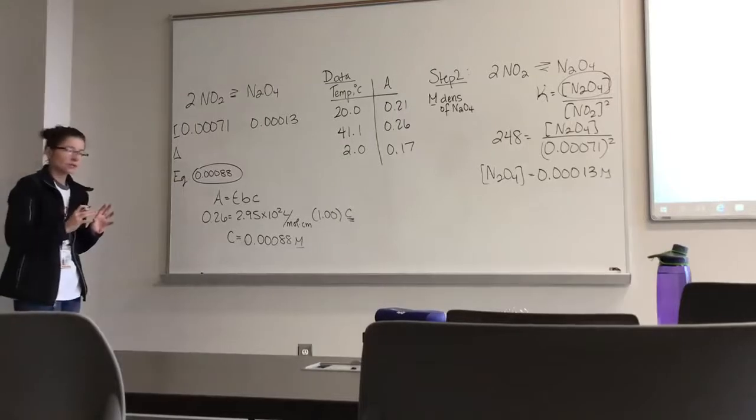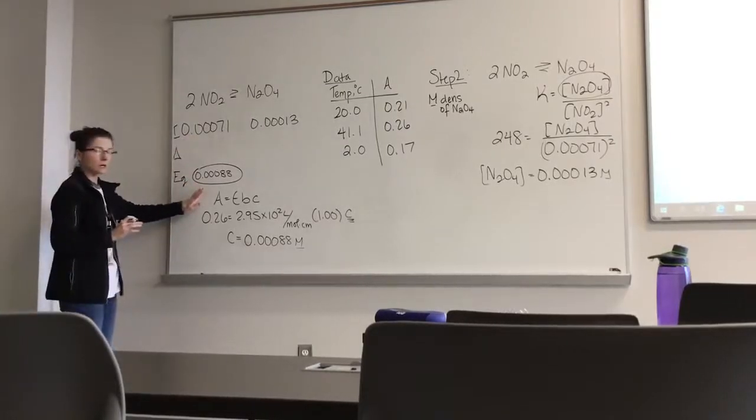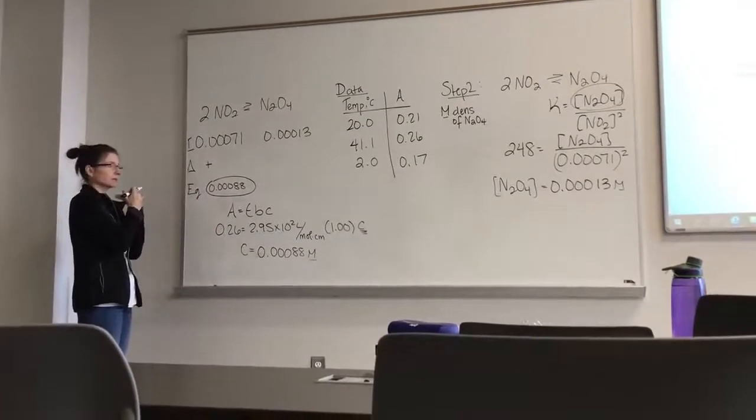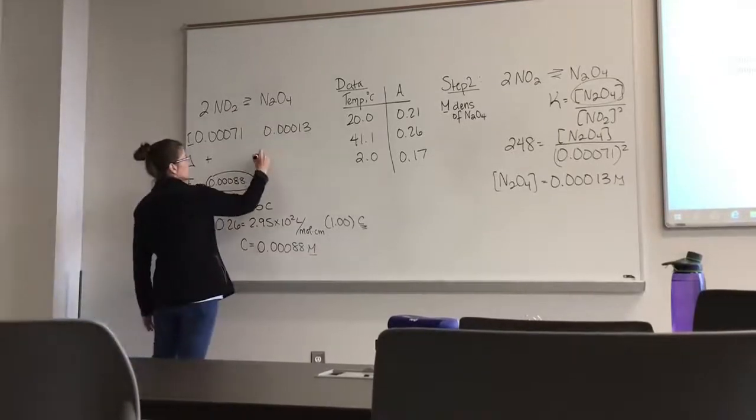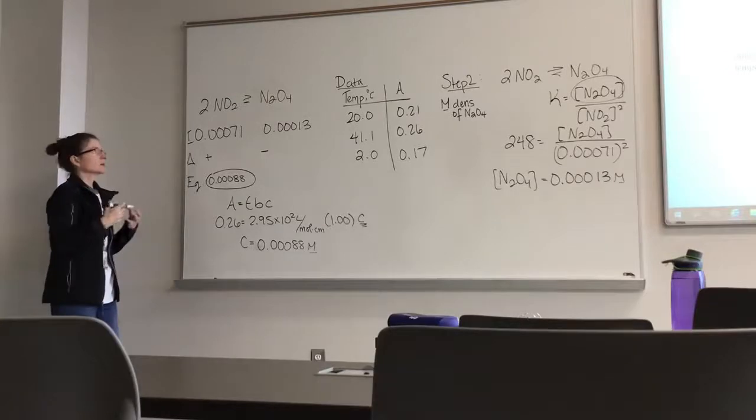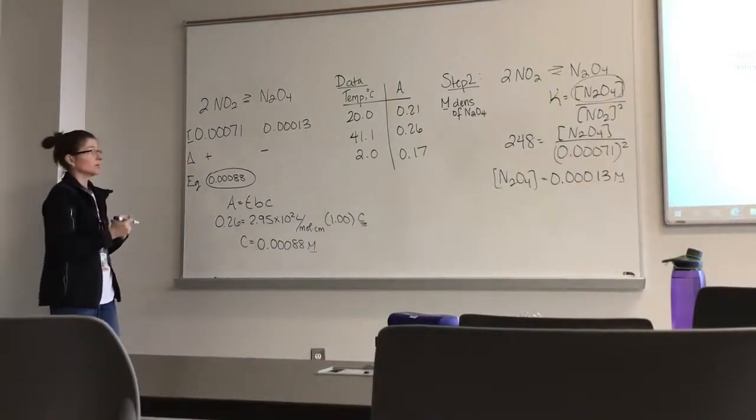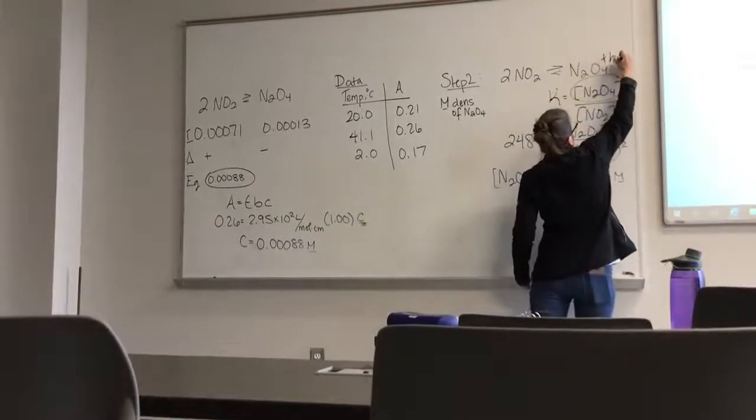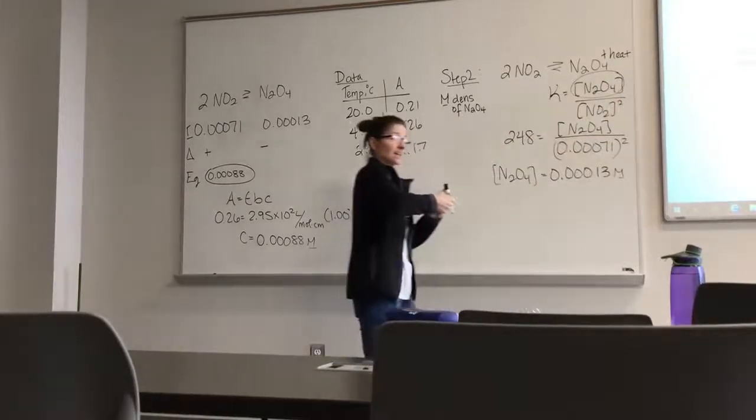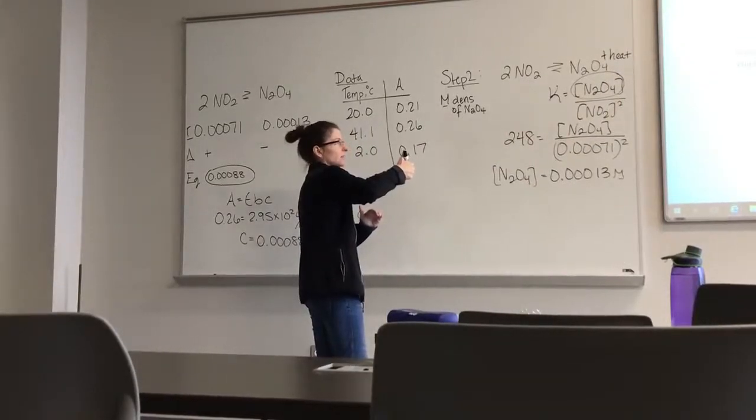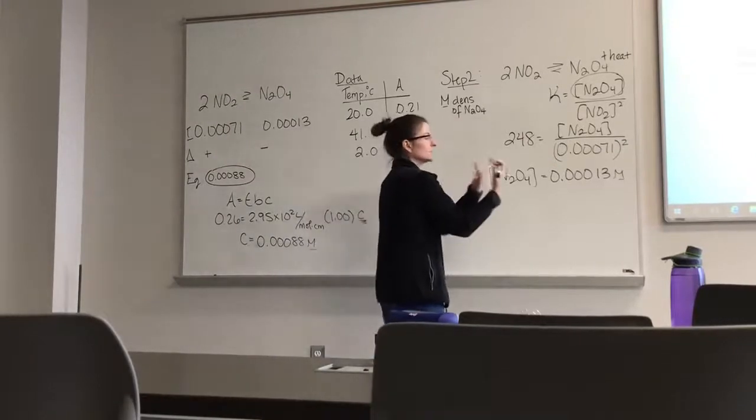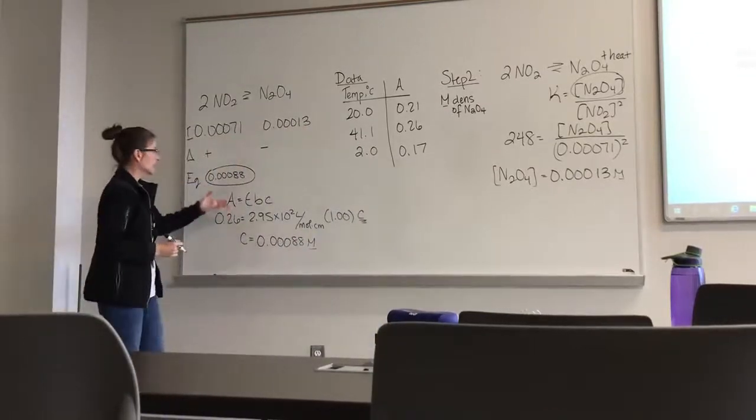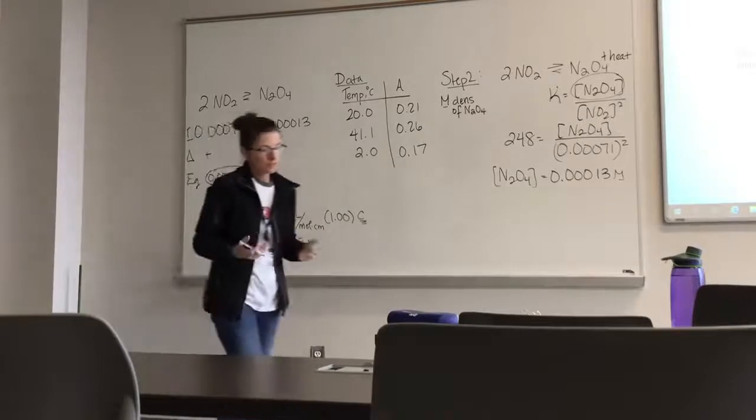Now notice something very interesting. I am producing more NO2 gas. So that means that I am going in this direction. My equilibrium is shifting in this direction, which means that if it's shifting in that direction, I am losing or consuming N2O4, which is one of the things we talked about. That should make sense, because we've already talked about this reaction being exothermic, which means that heat is a product. If I add heat, that's the stress. Le Chatelier says the counteraction is I've got to get rid of that heat, so it's going to shift to the left to make more NO2, hence the higher absorbance and the higher concentration.